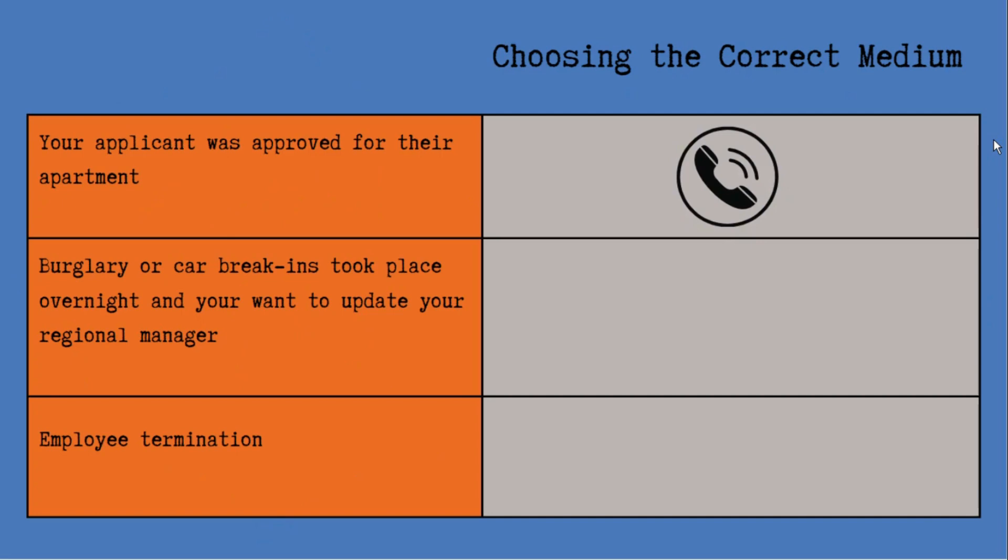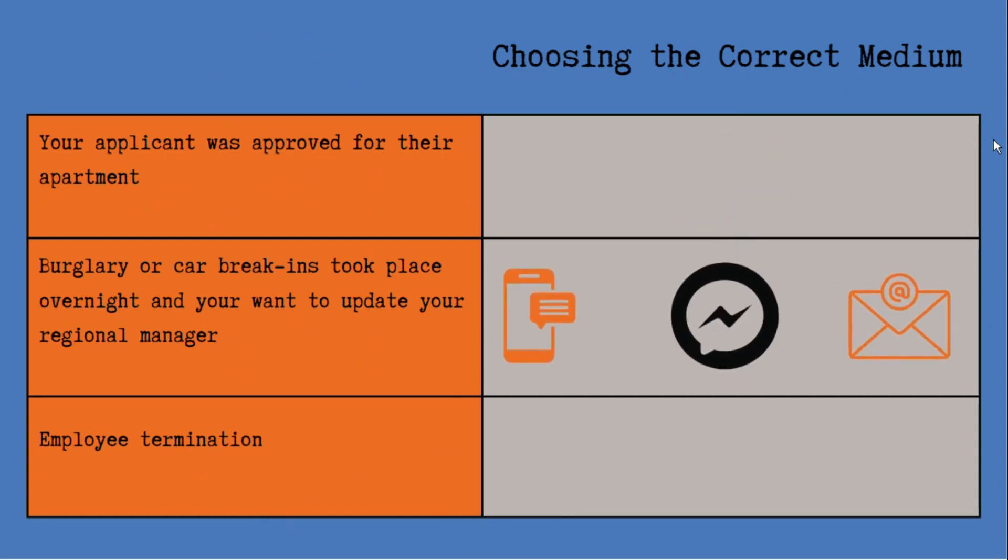Alright, let's look at number two. Burglary or car break-ins took place overnight, and you want to send an update to your regional manager. This scenario is a little more dependent on a few variables, such as the severity or just the preference of your regional manager. In most instances, notification via text, chat, or email would be acceptable.